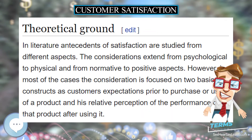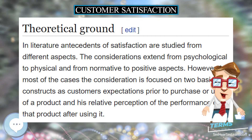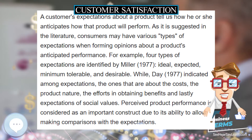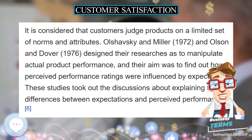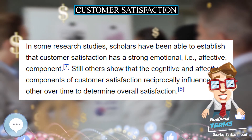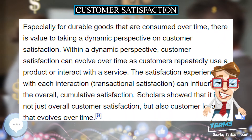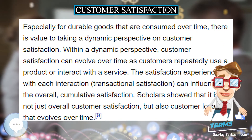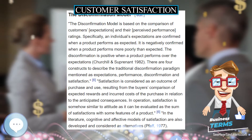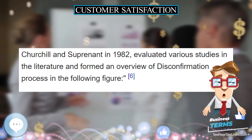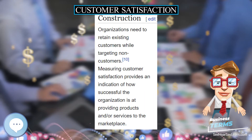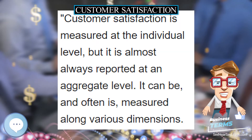The level of satisfaction can also vary depending on other options the customer may have and other products against which the customer can compare the organization's products. Work done by Parasuraman, Zeithaml, and Berry between 1985 and 1988 provides the basis for the measurement of customer satisfaction with a service by using the gap between the customer's expectation of performance and their perceived experience of performance. This provides the measurer with a satisfaction gap which is objective and quantitative in nature. Work done by Cronin and Taylor propose the confirmation/disconfirmation theory, combining the gap described by Parasuraman, Zeithaml, and Berry as two different measures — perception and expectation of performance — into a single measurement of performance according to expectation.